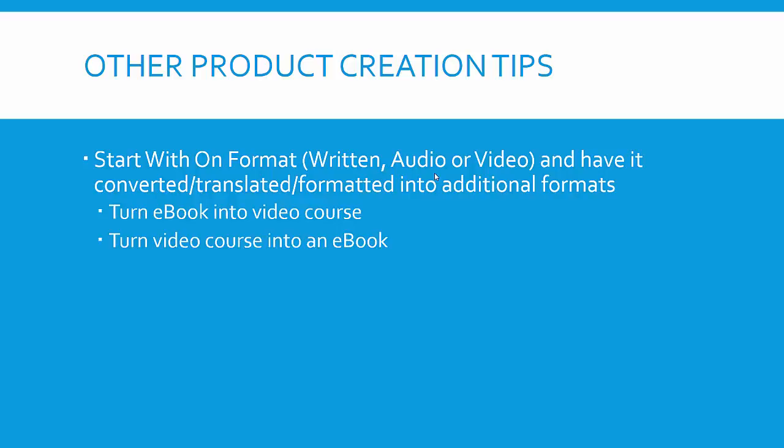Other product creation tips: start with one format — written, audio, or video — and have it converted into additional formats. Big secret: if you have a written product and want to get it converted into audio or video, it's going to cost you at most a couple hundred dollars, not thousands. Those products will make your money back in the first three or four sales of your audio or video course. It can be done in usually a week to two weeks. Get up on Freelancer, Odesk, or the freelancing sites — just make sure you follow our advice on finding outsourcers, as it's not as easy as it may seem.